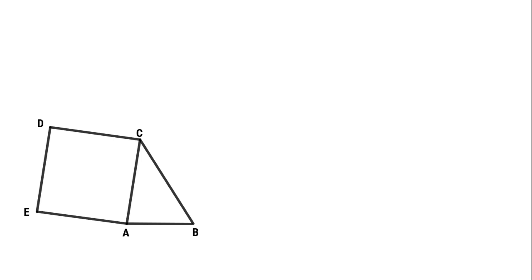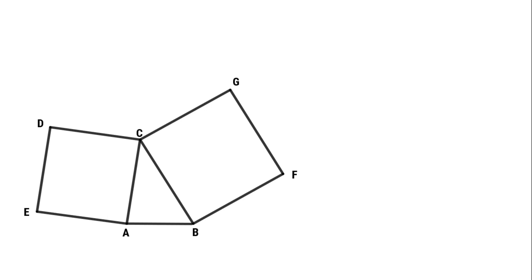Square ACDE with side AC shared with triangle ABC. Square BCGF with side BC shared with triangle ABC. Make an isosceles triangle ABH with the same base AB as triangle ABC.